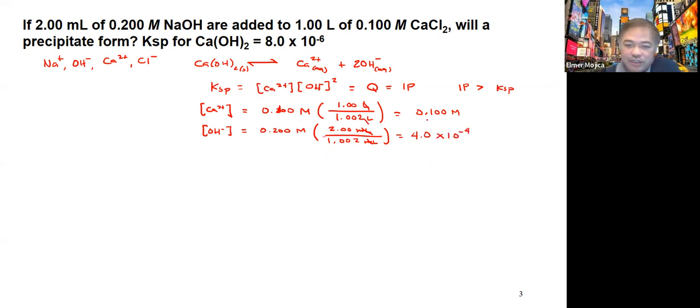If you're going to look at this, we're going to replace this value here. That's 0.1 times 4.0 times 10 to the negative 4 squared based on the expression. Based on this, the answer that you will get is 1.6 times 10 to the negative 8.